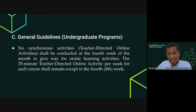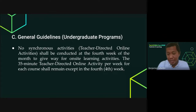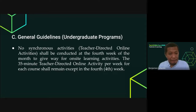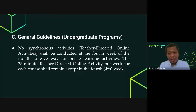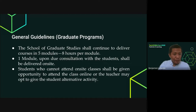The third guideline is that no synchronous activities — meaning teacher-directed online activity — shall be conducted in the fourth week of the month, to give way for on-site learning activities. The 35-minute teacher-directed online activity per week shall remain, except in the fourth week. This applies to both general education and major courses. So if we fully implement limited face-to-face classes, teacher-directed activities will only be in the first, second, and third weeks of the month.